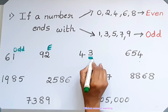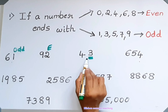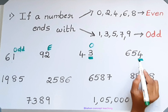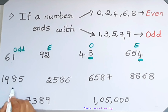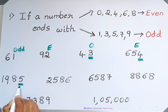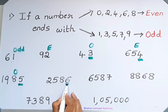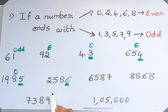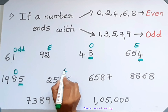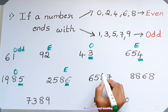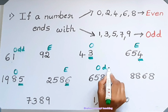The ending number of 43 is 3, therefore 43 is an odd number. The ending number of 654 is 4, therefore 654 is an even number. The ending number of 2586 is 6, so 2586 is an even number. The last digit of 6587 is 7, so 6587 is an odd number.